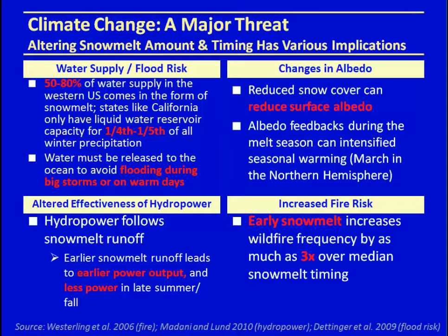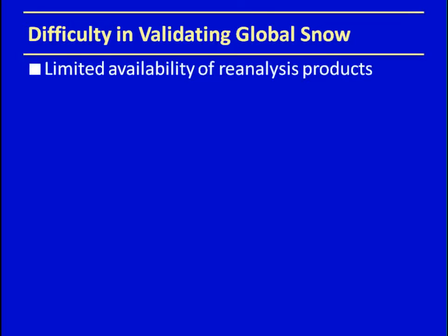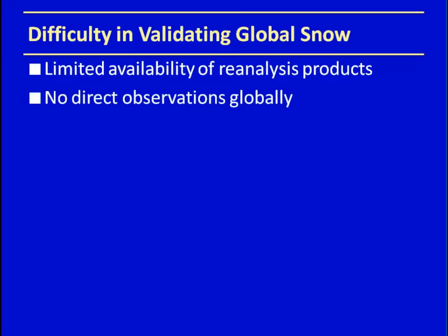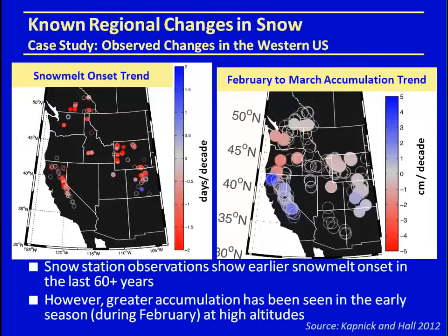We've built our infrastructure based on certain snowmelt timings and snowfall amounts, and changing those can greatly affect us. It's really important to understand global snow and how it's changing. However, there's difficulty in validating it because of limited availability of reanalysis products for all snow variables including snowfall and snowpack, limited direct global observations except for recent satellite data, and a limited length of available observing systems. As a result, we have some case studies to understand what behavior we might expect when looking at global data.